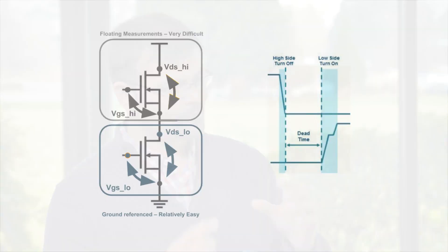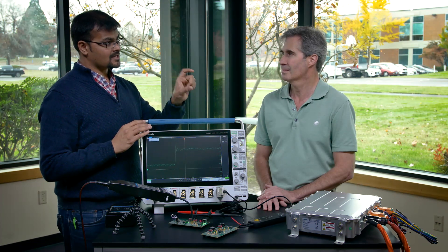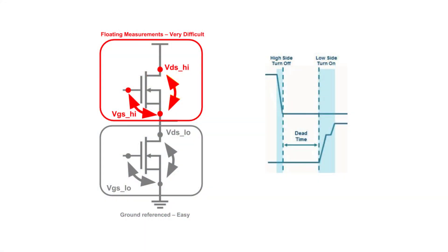In the past, what has been well understood and easy is the low side measurement. If you look at the circuit, the low side measurements are usually well understood because they're ground referenced, and you can easily make those measurements. What's been really tough is the high side measurement, and what's even tougher for automotive is the high switching frequencies. So the high voltage in the presence of high switching frequency and the floating voltage — extremely difficult.